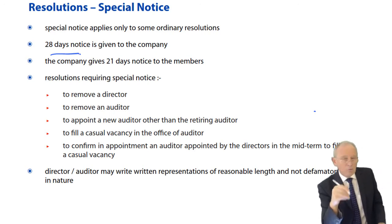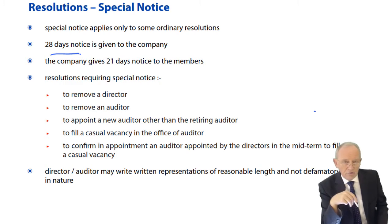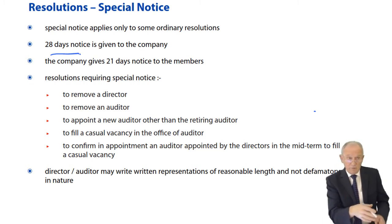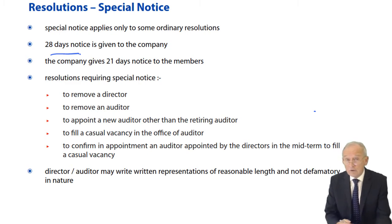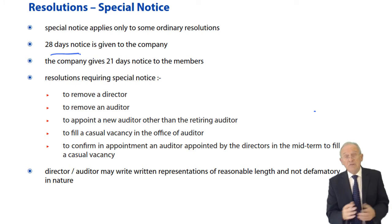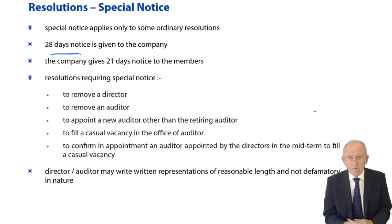The most common reason why we have ordinary resolutions requiring special notice is to remove a director before the next annual general meeting — to remove them part way through — or to remove the auditor before the end of their current year of office. It's a big deal. And so these directors or auditors, as the case may be, have the opportunity to make written representations.